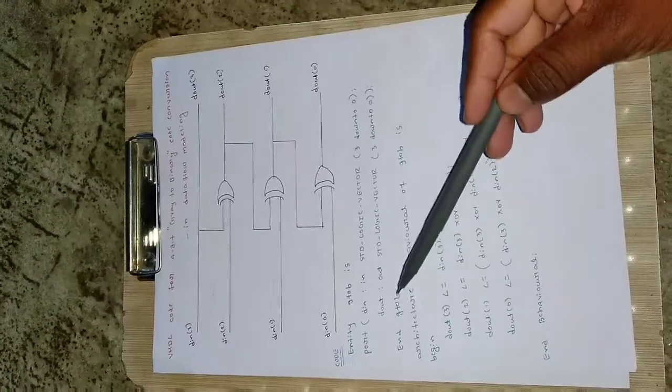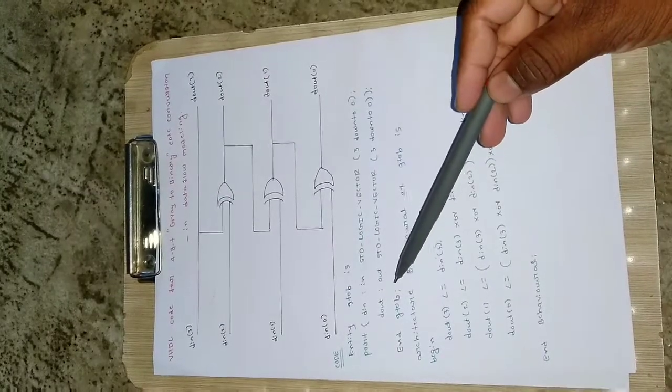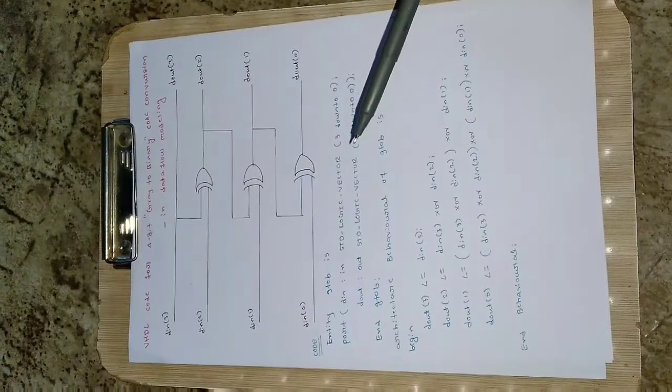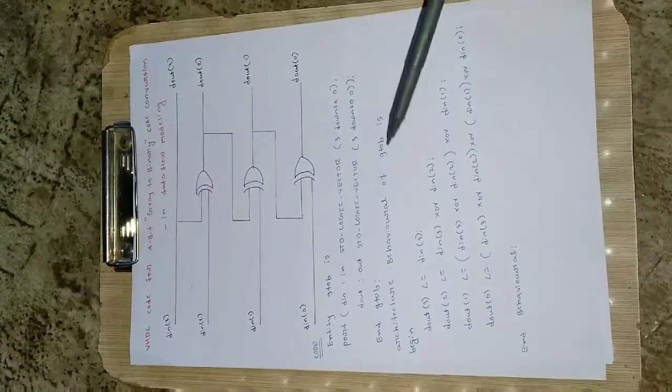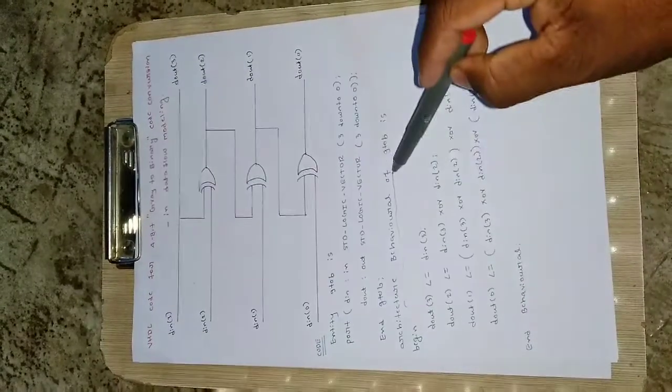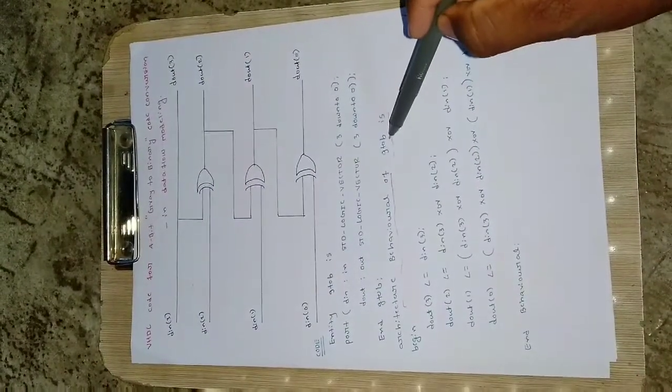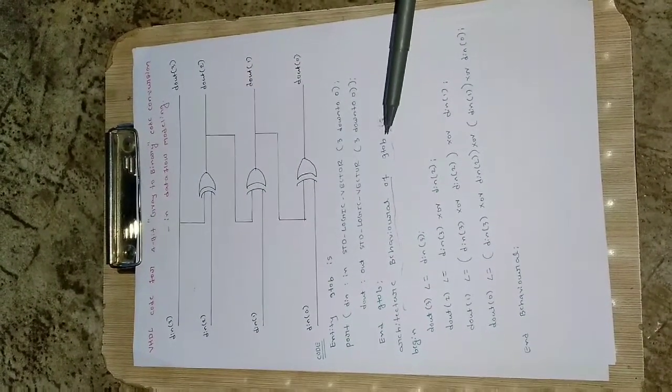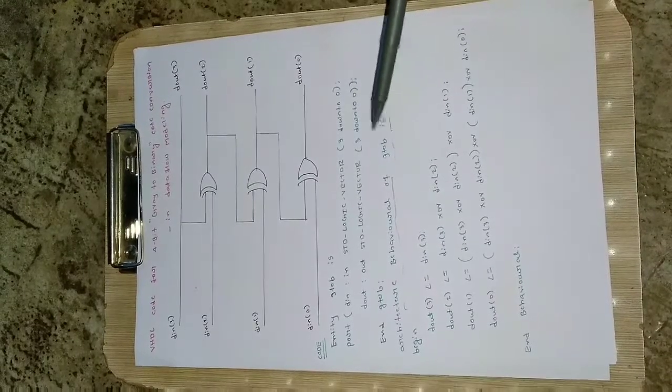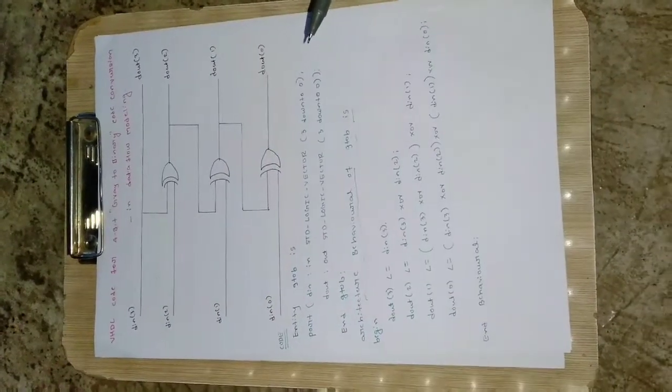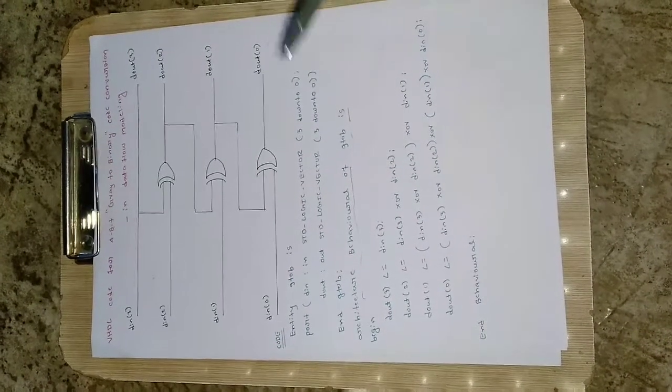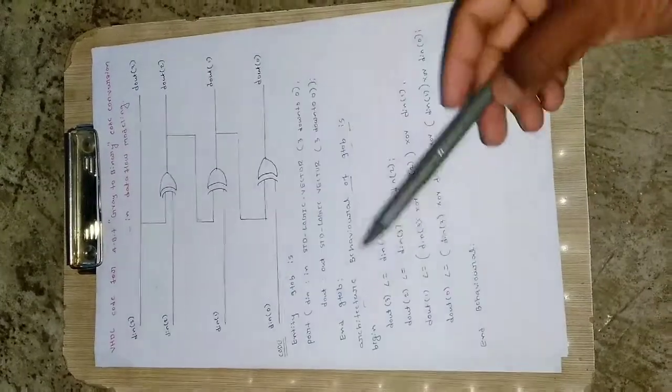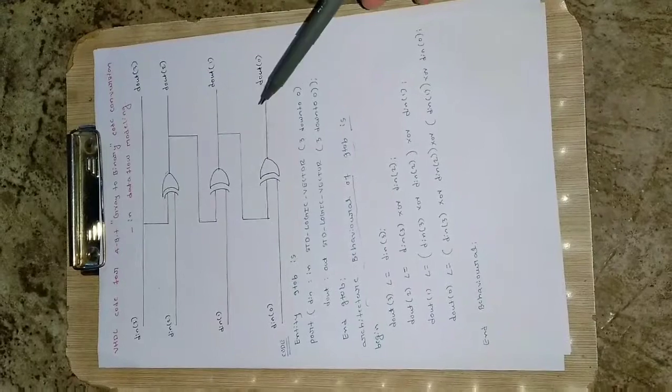At the end we will be writing end G to B, so we are ending this entity here. Then we have defined the entity, now we will call that entity for its execution. Architecture behavioral of G to B is, so this is all standard. The name which we have used to construct the entity should be used here so it will not throw an error.